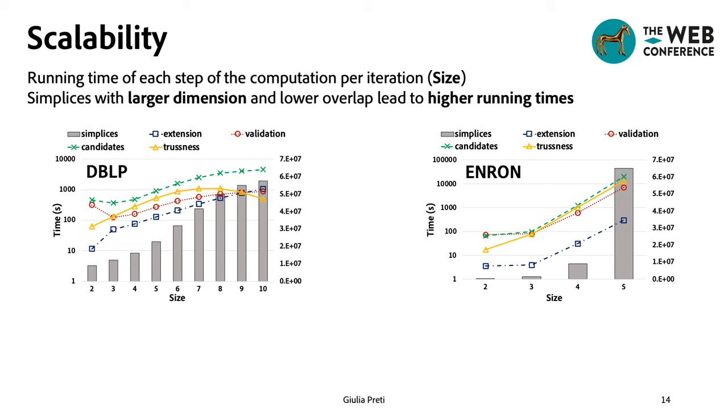These steps are the generation of the simplices to examine via extension of the simplices retained in the previous iteration, the computation of the candidate joists, the validation of the joists, and the computation of the trussness values.